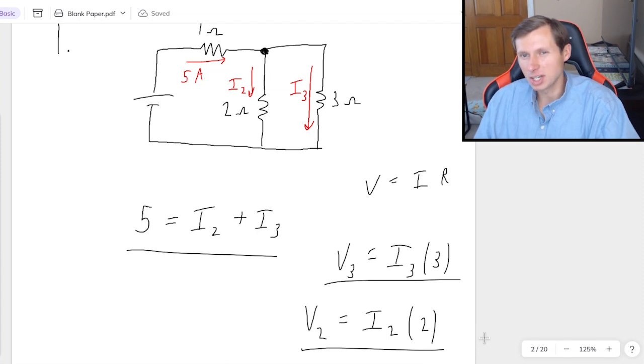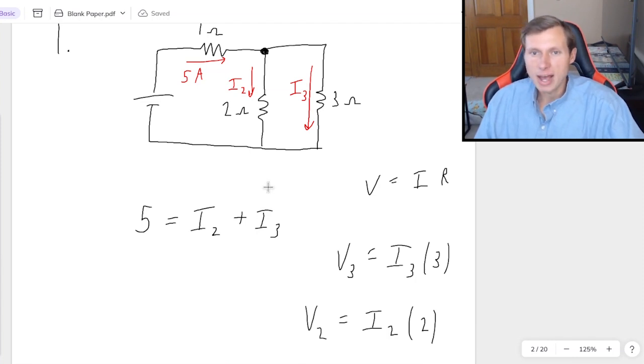And I2 and I3 over here are already counted over here. So four distinct unknown variables, that means I need four equations. Right now I have one, two, three. So where's the fourth equation going to come from? It's going to come from the fact that because these two are in parallel, V2 equals V3. And that's always true for parallel. The voltages will be equal to each other.